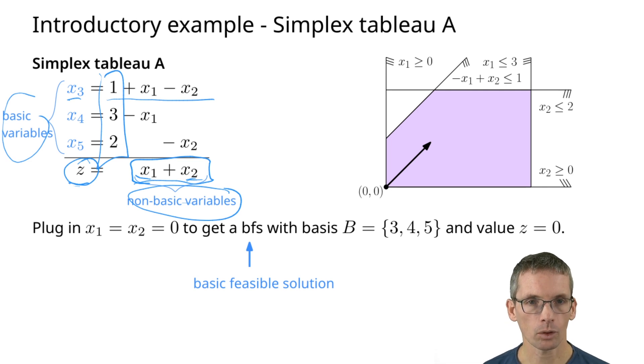This corresponds in my 2D drawing, so this is of course in 5D, but in my 2D drawing where I only see x1 and x2, it corresponds to this point zero zero. It is feasible, but obviously it's by far not optimal yet.